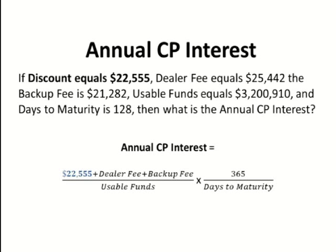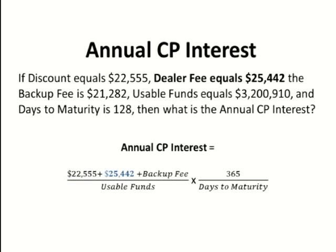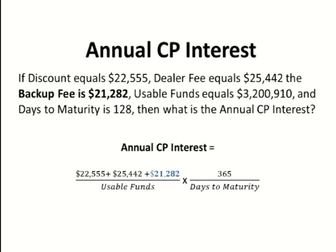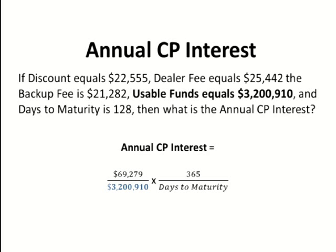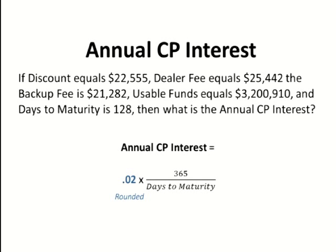We'll start with the discount, then the dealer fee of $25,442, and the backup fee — which exists on some commercial paper transactions — of $21,282. We'll go ahead and total that. Next, the usable funds you'll receive from this transaction: $3,200,910. We'll go ahead and calculate that.